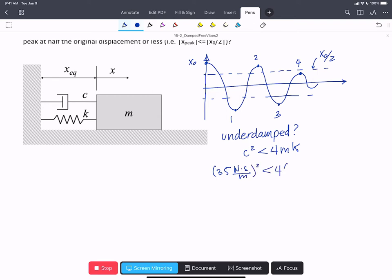And we do find that we have 1225 on one side, which is much less than 56,000 on the other side. So the system is underdamped.